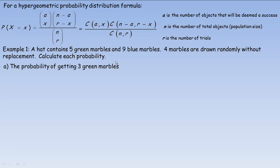Example one: a hat contains five green marbles and nine blue marbles, and four marbles are drawn randomly without replacement. The without replacement is why we use the hypergeometric — if we put the marble back each time, we could use the binomial. To use the hypergeometric formula, identify A, N, and R. A equals five because there are five green marbles. N equals fourteen because there are five green and nine blue altogether. R equals four because we're selecting four.